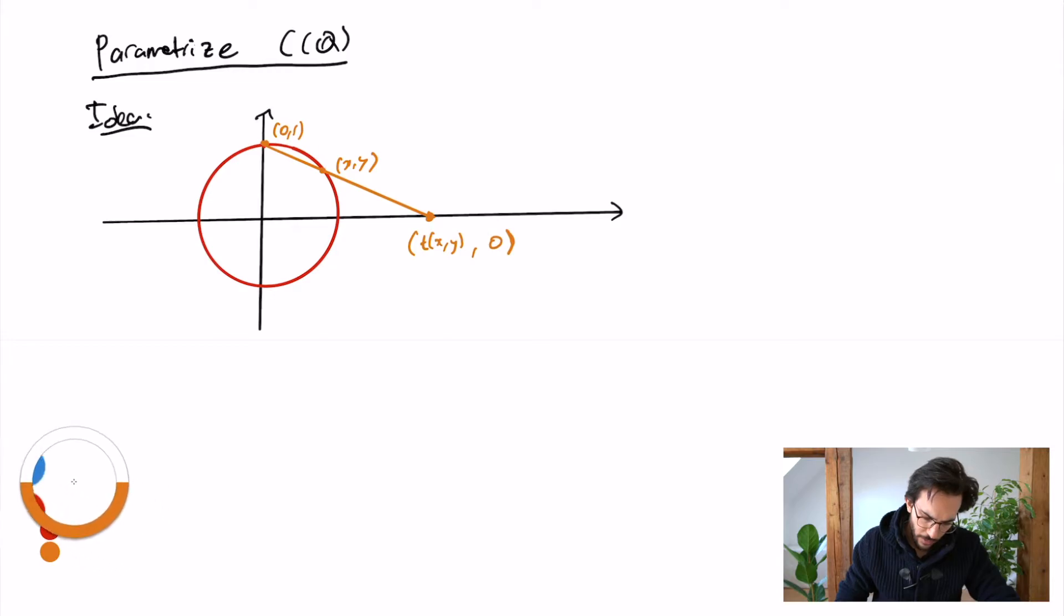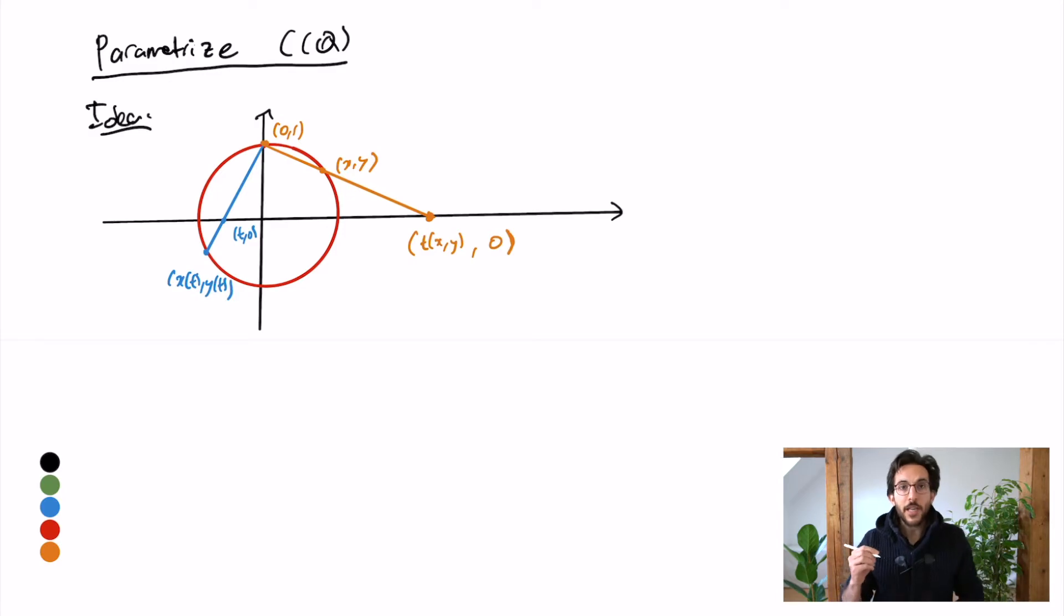I can reverse this construction so that if you were to give me a point on the x-axis, let's say this point here t0, then I can draw a line connecting (0, 1), the north pole, to t0. And I look at where it intersects my circle. And I will write this point as x of t and y of t. This is something I can do already with a real circle, and then I get a projection from the north pole to the real axis. And it's kind of clear that I get a bijection.